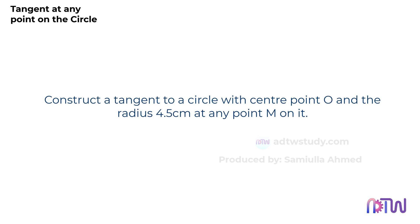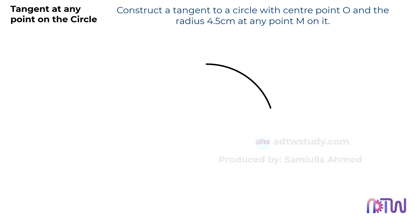According to the given instructions, we're tasked with drawing a circle with a radius of 4.5 centimeters. We'll designate the center point of this circle as point O. Then, we'll draw a tangent passing through any point on the circle. Let's do this.